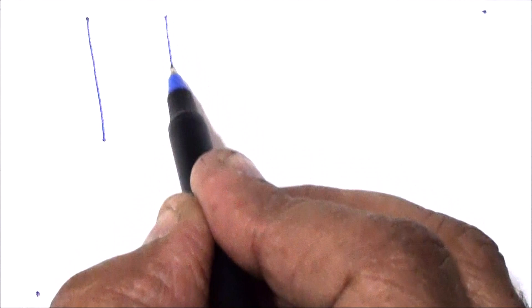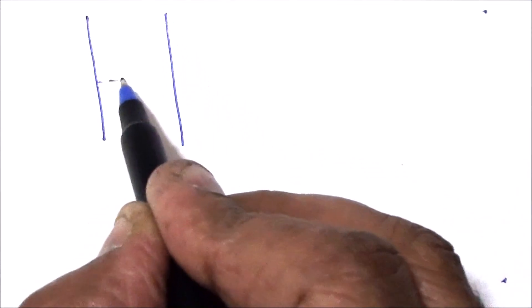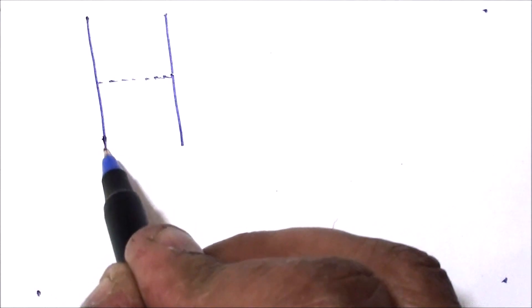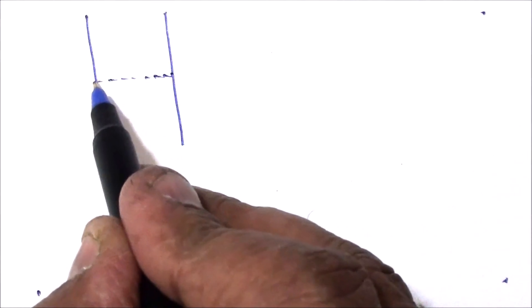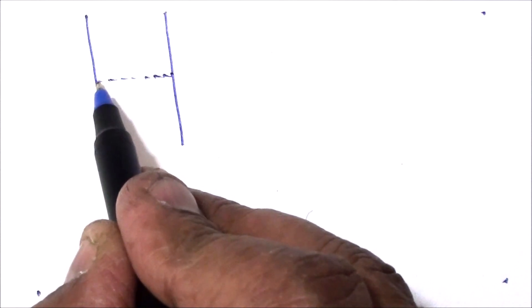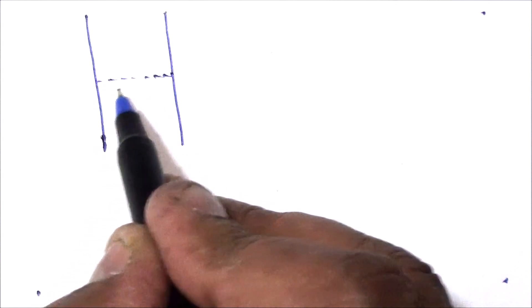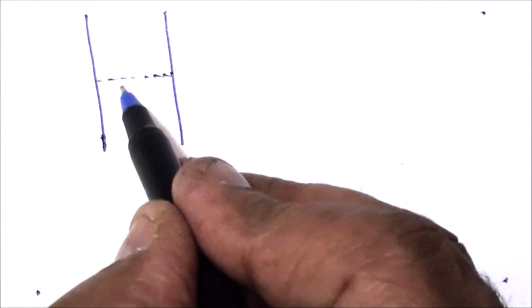When a liquid comes in contact with a solid, the surface of the liquid at the point of contact may not remain exactly horizontal. Let us try to see why.